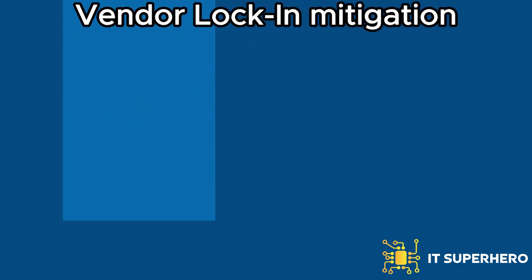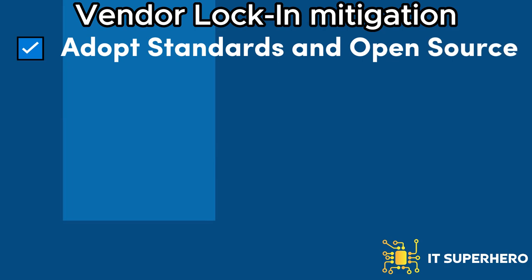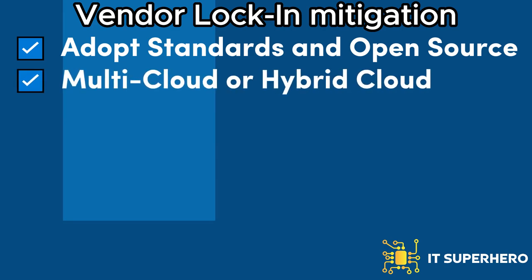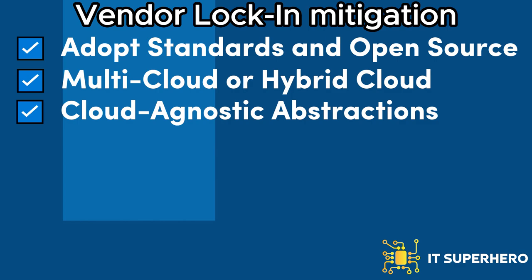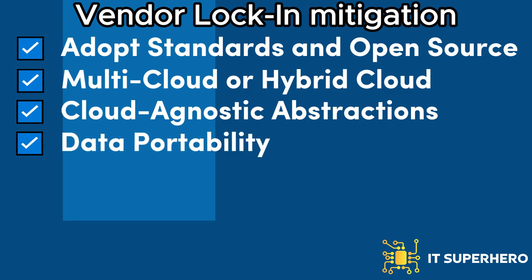Strategies to mitigate vendor lock-in: adopt standards and open-source technologies by giving preference to cloud providers that adhere to industry standards. Use a multi-cloud or hybrid cloud approach to distribute workloads across multiple providers, avoiding exclusive reliance on a single vendor. Implement cloud-agnostic frameworks, libraries, and APIs to abstract applications from specific cloud provider dependencies. Design data storage and processing architecture with portability in mind, ensuring easy migration and replication of data between cloud providers or on-premises systems.